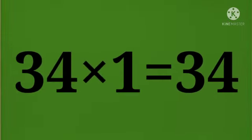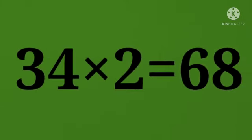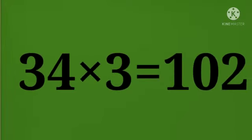34 times 1 equals 34. 34 times 2 equals 68. 34 times 3 equals 102.